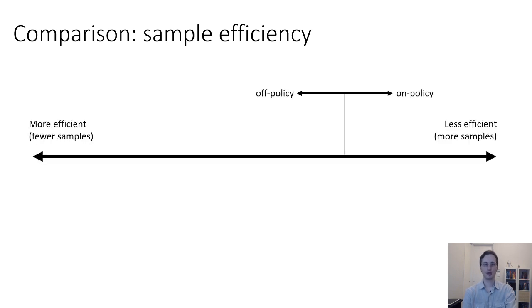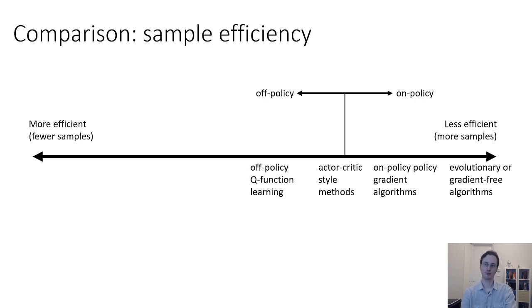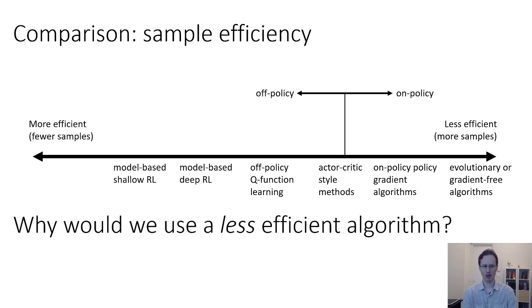So in general, if we want to look at a kind of spectrum with more efficient algorithms on the left and less efficient algorithms on the right, a major dividing line on the spectrum is whether it's an on-policy or an off-policy algorithm. But then we could say, well, why would we ever want to use a less efficient algorithm? So it seems like we should just go with the stuff on the left end of the spectrum.